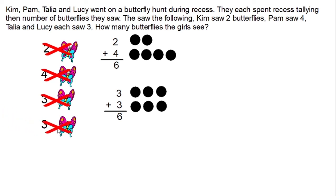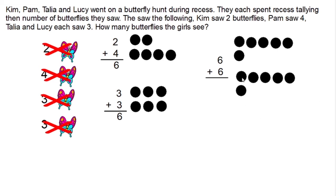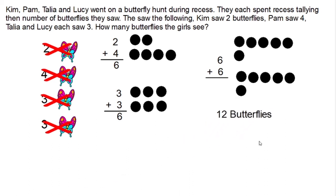We're not yet done because now we have to figure out how many are altogether. Kim and Pam had six, Talia and Lucy had six. To get the solution to our problem we figure out six plus six: one, two, three, four, five, six, seven, eight, nine, ten, eleven, twelve. Between the girls, they collected twelve butterflies.